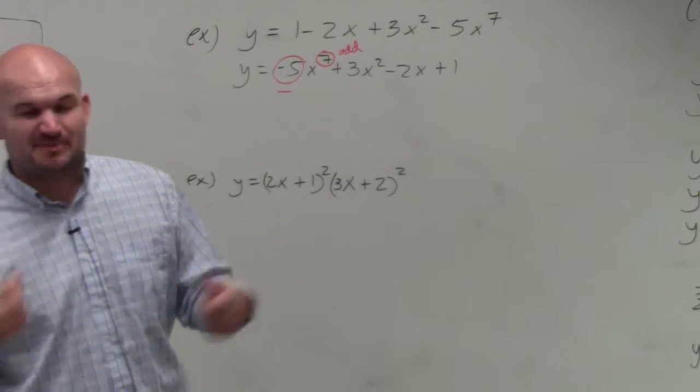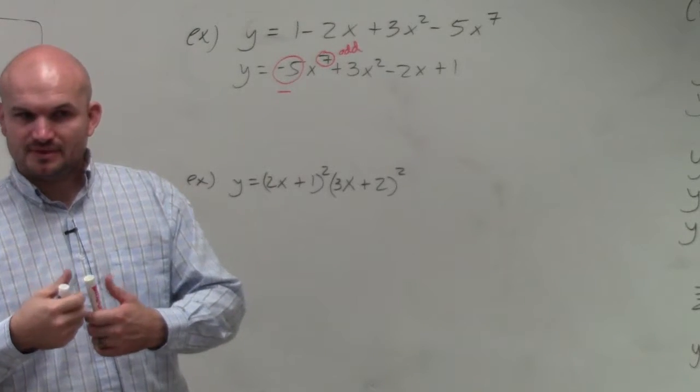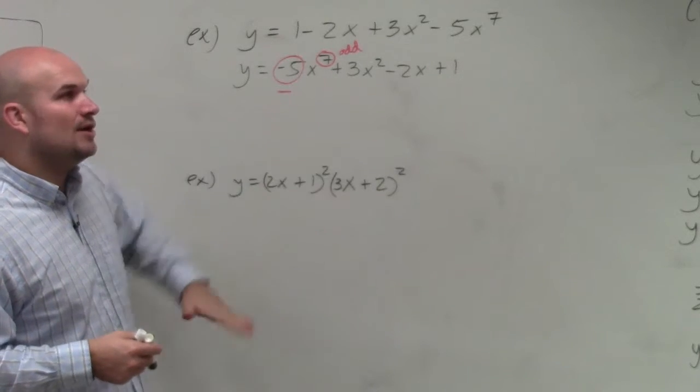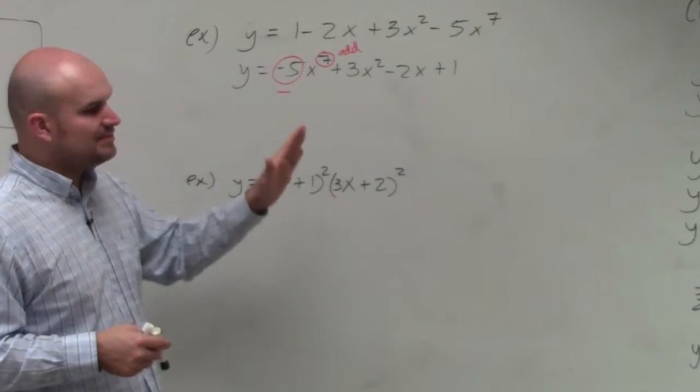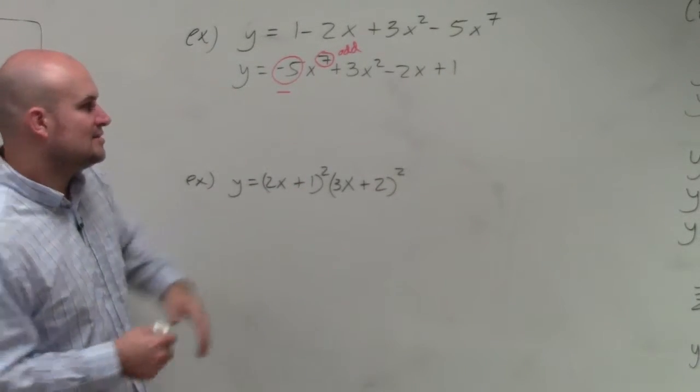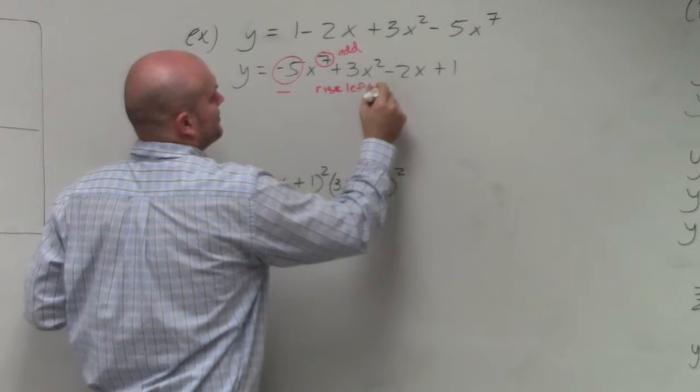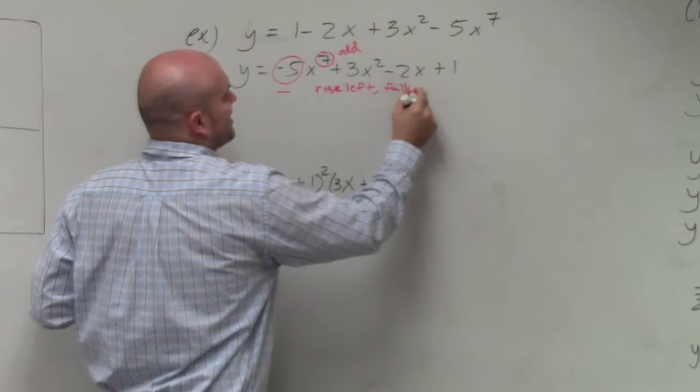I would recommend, especially if you're having trouble with limits, to just write this as, it's negative and it's odd. So odd identity function, but negative would look like this. Therefore, it's a rise left, falls right.